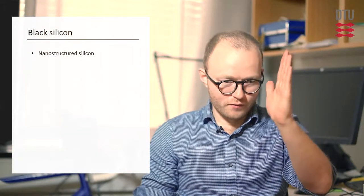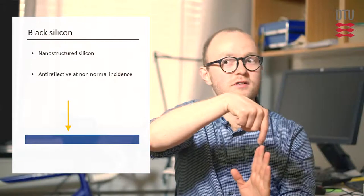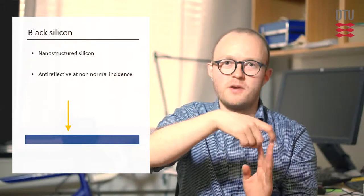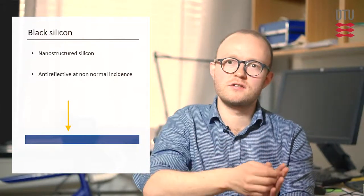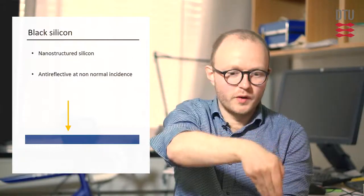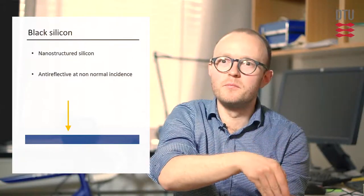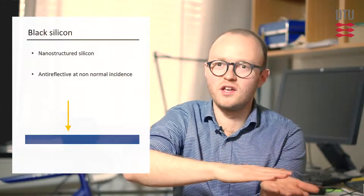Another interesting feature of nanostructured silicon or black silicon is that it's actually not just anti-reflective when we look at it at normal incidence, which as researchers, we typically measure the cell at normal incidence. That is, the direction of the light beam is that it's orthogonal to the solar cell plane.